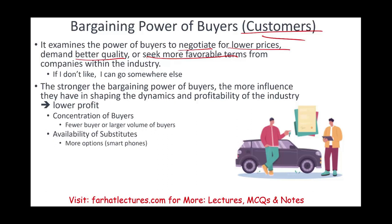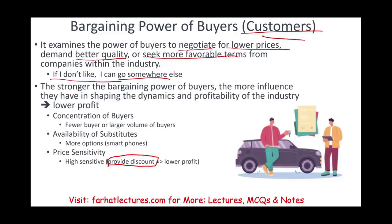Do customers have substitutes and other options? For example, if they don't like the iPhone, they can choose something else — there are options. Also consider price sensitivity: if buyers are highly price sensitive, you may need to offer discounts, which reduces your profit. In the pharmaceutical industry, without government regulation, companies could charge almost any price because demand is inelastic. Switching cost is also key — how easy is it for buyers to switch from one company to another? For example, switching from Netflix to Amazon Prime is very easy — you can cancel and subscribe without even leaving your couch.